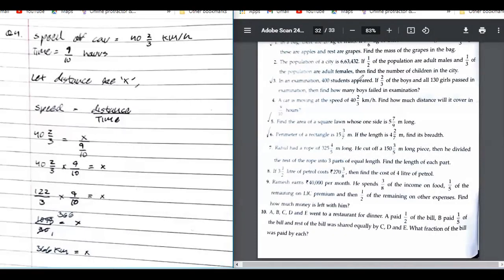A car is moving at a speed of 42 by 3 km per hour. How much distance will it cover in 9 by 10 hours? So we have the formula with speed of the car and time. We are lucky right now that this is also in hours and this is also in hours.